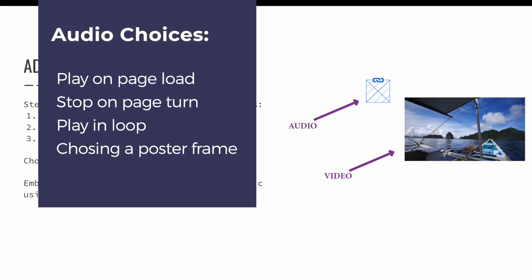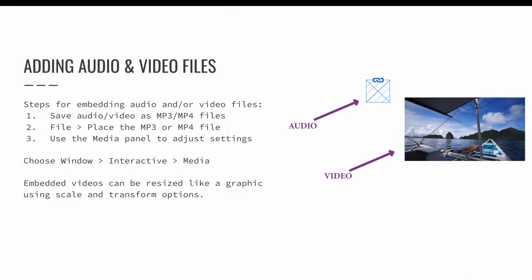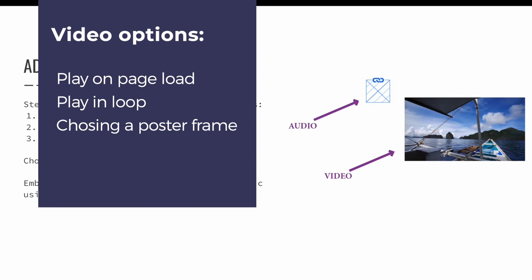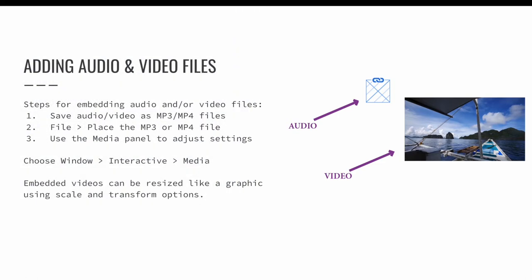Audio choices include play on page load, stop on page turn, play in loop, and choosing a poster frame, which is the image you will see where the audio has been placed. Video options include play on page load, play in loop, and choosing a poster frame, just like with the audio file. If your video file displays bigger or smaller than you would like, you can change the size the same way you would a picture in InDesign, using the scale options on your control bar or the transform panel.